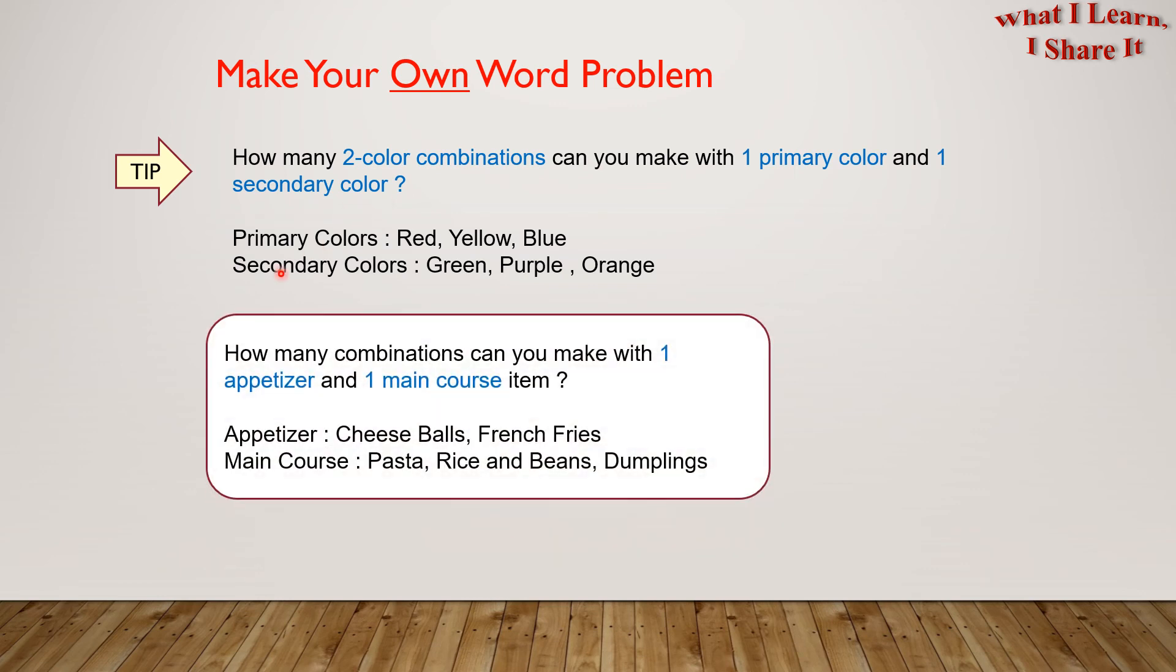Here is mine. How many combinations can you make with one appetizer and one main course item? Appetizer: cheese balls and french fries. Main course: pasta, rice and beans, and dumplings.